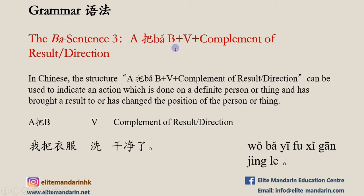The 把 sentence is used with a verb plus complement of result or direction. Example: 我把衣服洗干净了。 衣服 means 'clothes,' 干净 means 'clean.' The sentence means: 'I washed the clothes clean.'